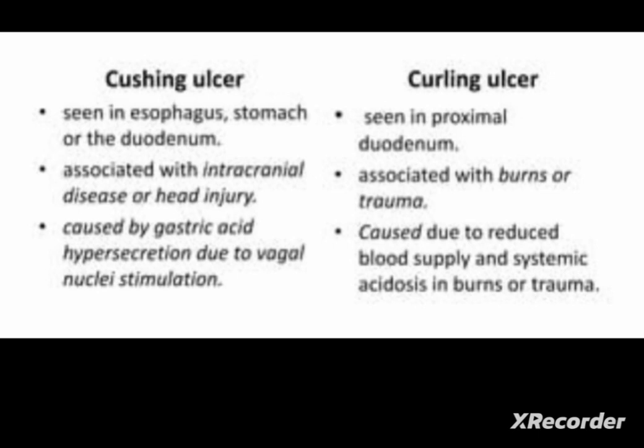In the case of Cushing ulcer, it is caused by gastric acid hypersecretion due to vagal nuclei stimulation — so it is mainly due to nerve stimulation. Cushing ulcer occurs due to intracranial problems: intracranial injury, raised intracranial pressure, and intracranial space-occupying lesions all may cause Cushing ulcer.